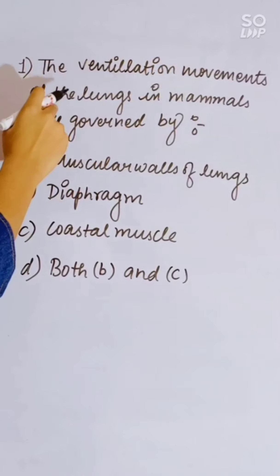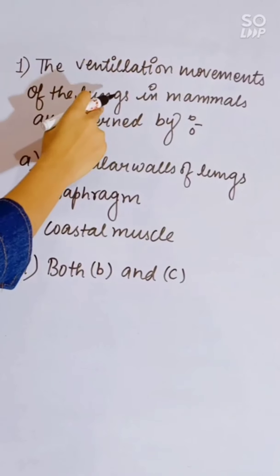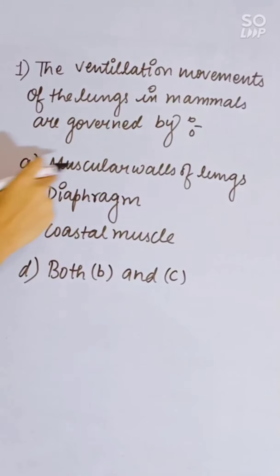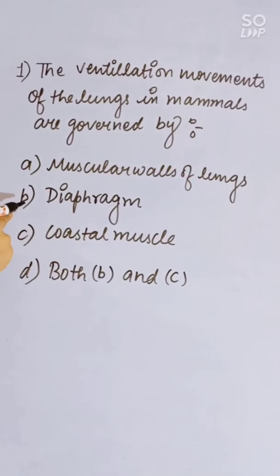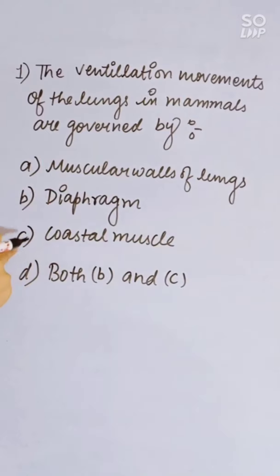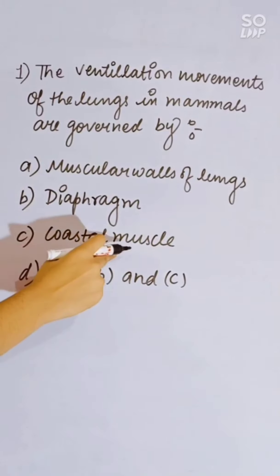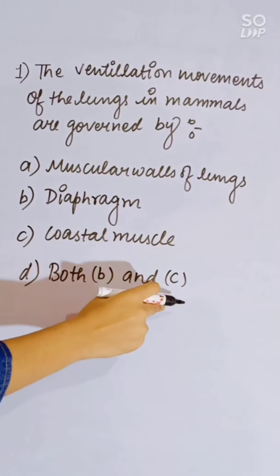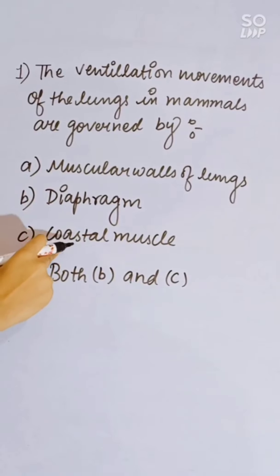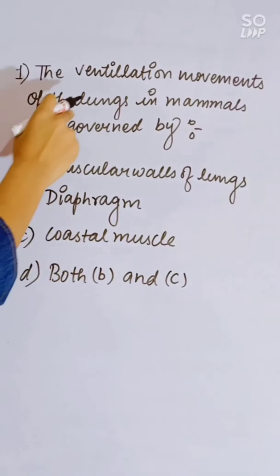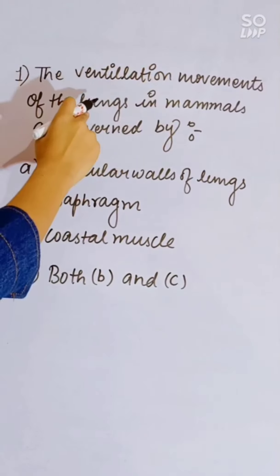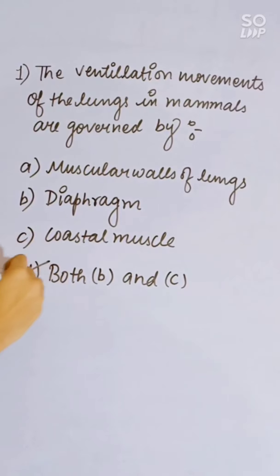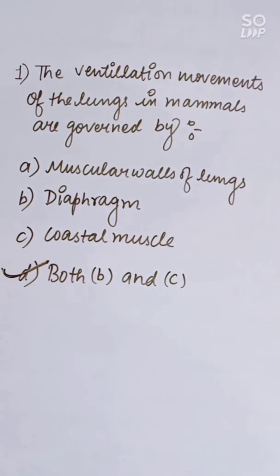The ventilation movements of lungs in mammals are governed by: muscular wall of lungs, diaphragm, costal muscles, or both B and C. The diaphragm and costal muscles help in the movement of lungs. Correct answer is both B and C.